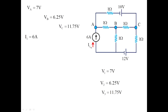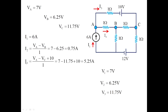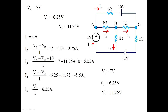Now finding the branch currents: I1 is given as 6 amps. I2 equals (VA minus VB)/1 equals 7 minus 6.25 equals 0.75 amps. I3 equals (VA minus VC plus 10)/1 equals 7 minus 11.75 plus 10 equals 5.25 amps. I4 is obtained as minus 5.5 amps. I5 equals VB/1 equals 6.25 amps. I6 equals minus 0.25 amps.